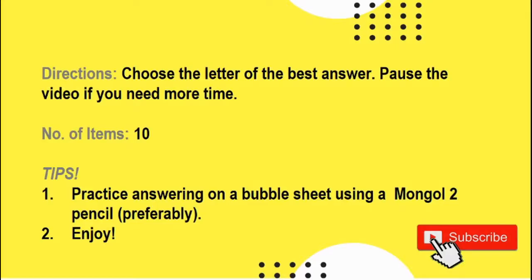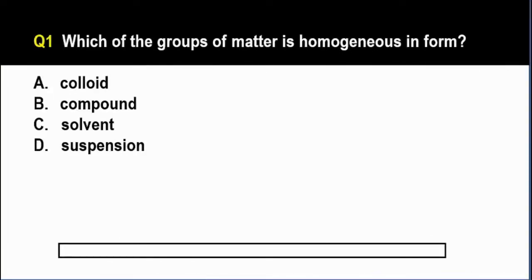For question number one, which of the groups of matter is homogenous in form? A. Colloid, B. Compound, C. Solvent, and D. Suspension. You have five seconds to answer. Go! The correct answer is letter B. Compound.